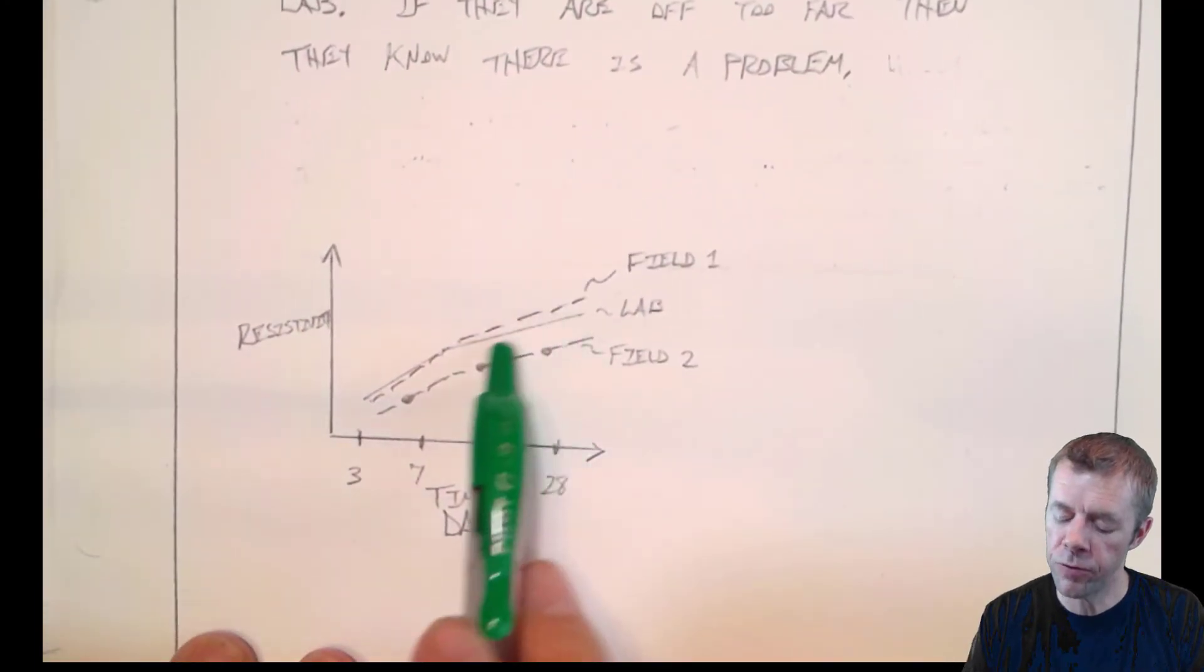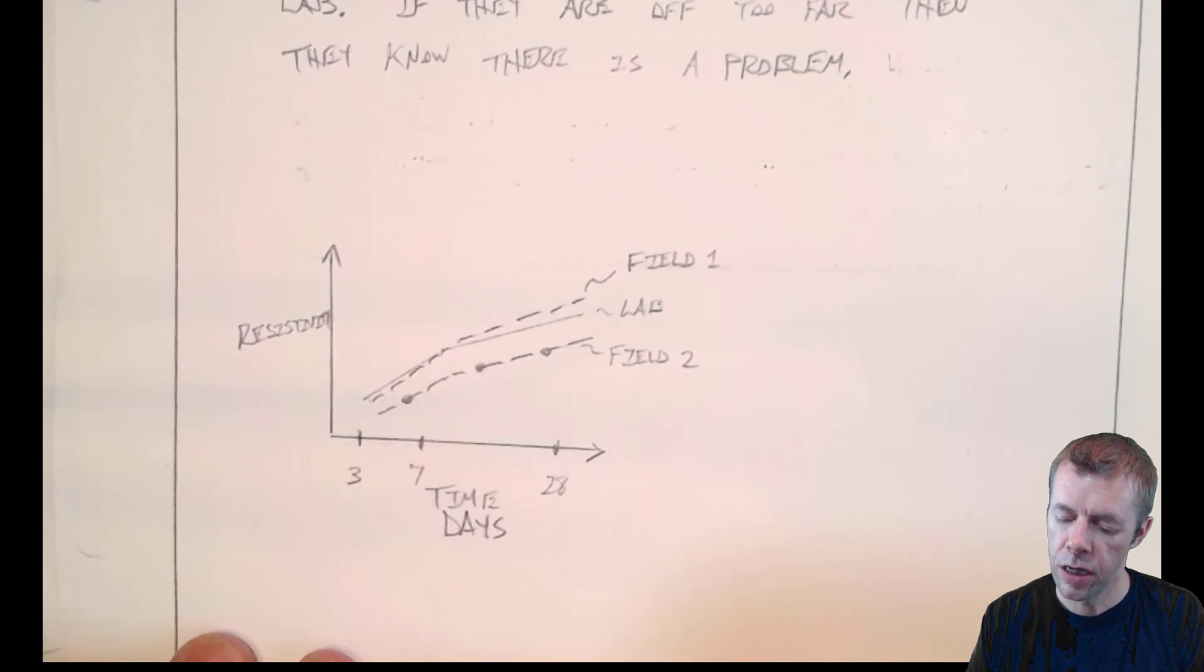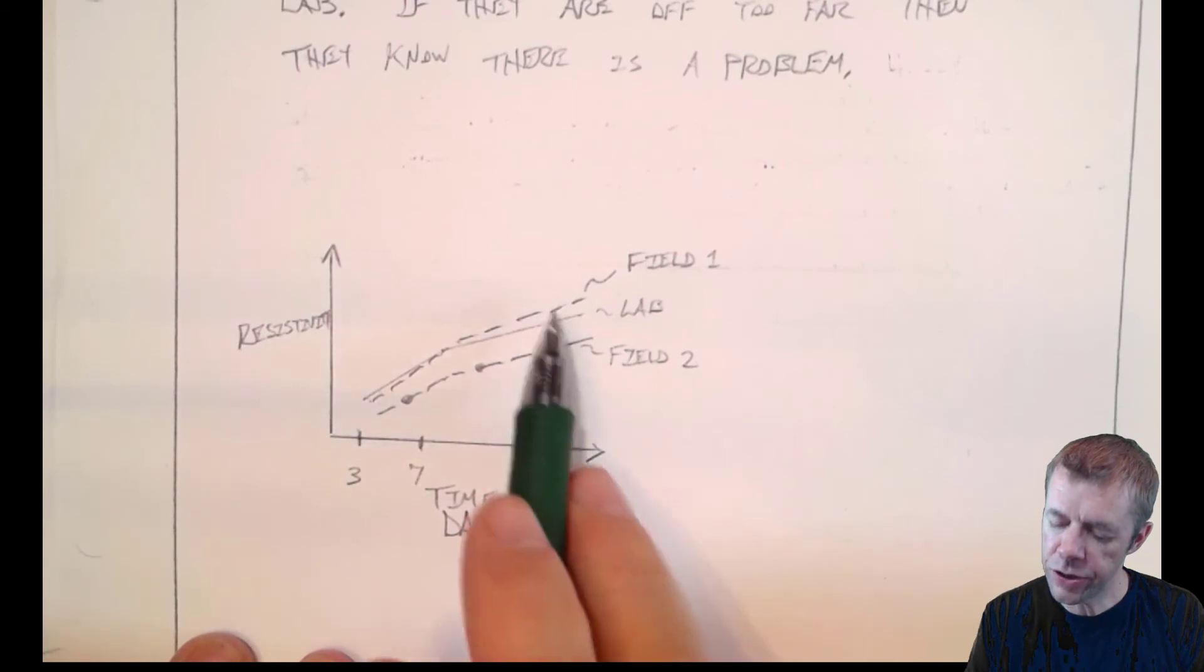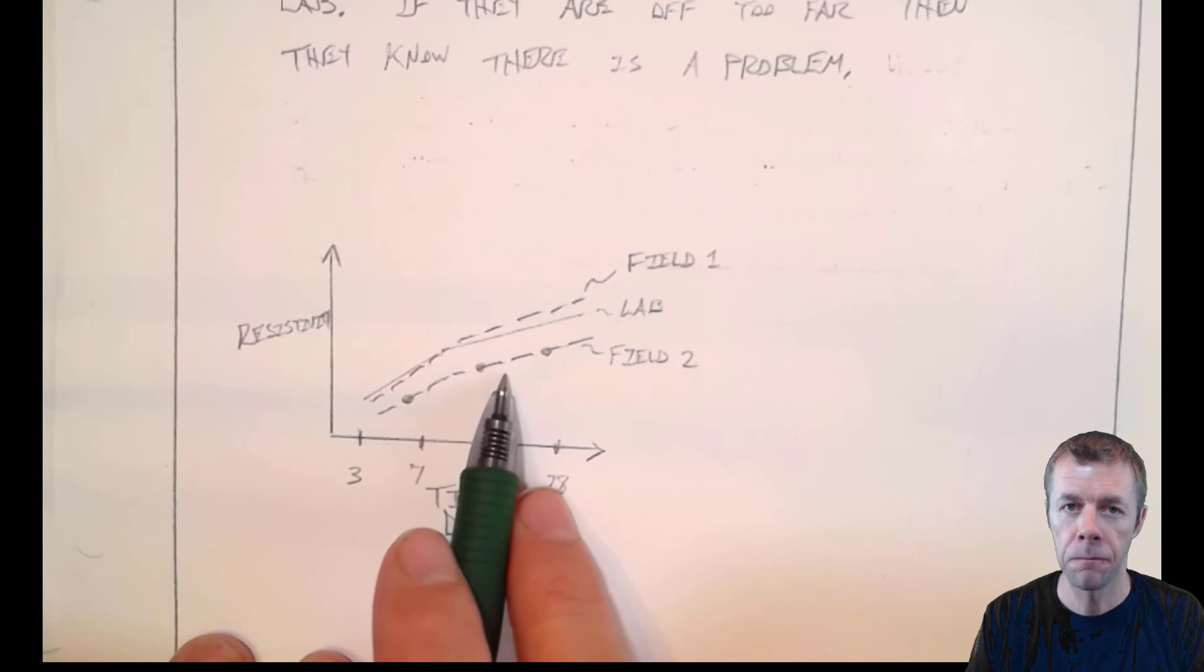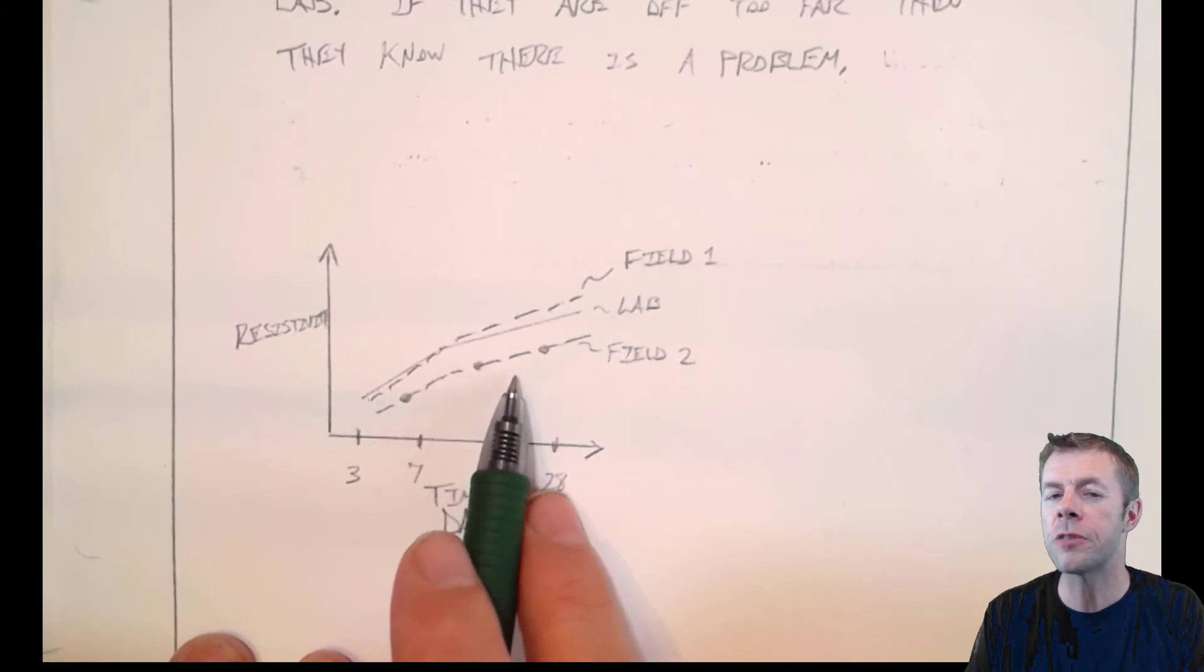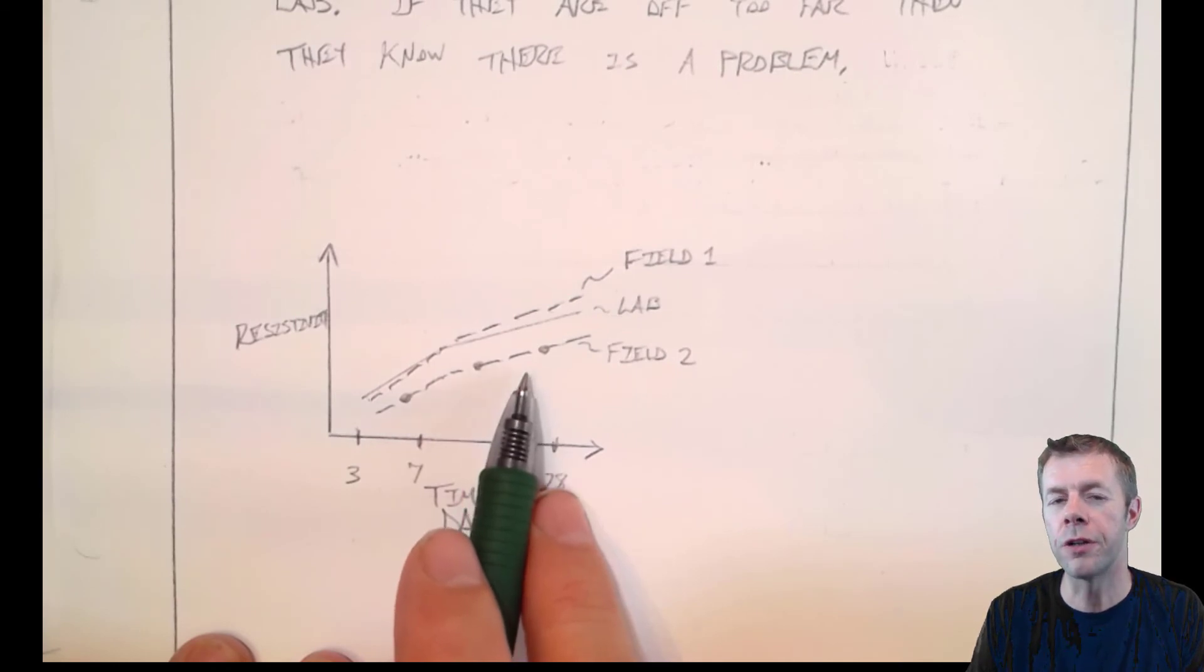For example, if my lab curve is here, and I have field curve, one field curve is here, and it's close, that's pretty good. But if I have another field curve, it's different. It's off. That lets me know that something is off. Something is different. Could be that the water to cement ratio is different. Could be the ingredients are different. Could mean they treated that sample poorly. Could be a lot of stuff. But we know it's different.